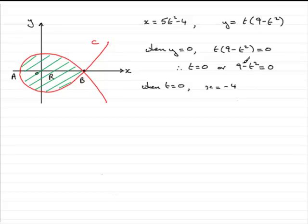Now we've got the other factor, 9 minus t squared, to equal 0. So when 9 minus t squared equals 0, we therefore have that t squared equals 9. And if we square root both sides, that leads to t equals plus or minus 3.